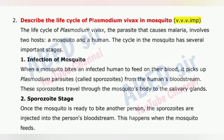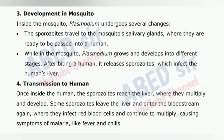2. Sporozoite Stage: Once the mosquito is ready to bite another person, the sporozoites are injected into the person's bloodstream. This happens when the mosquito feeds. 3. Development in mosquito: Inside the mosquito, Plasmodium undergoes several changes. The sporozoites travel to the mosquito's salivary glands where they are ready to be passed into a human. While in the mosquito, Plasmodium grows and develops into different stages. After biting a human, it releases sporozoites which infect the human's liver.